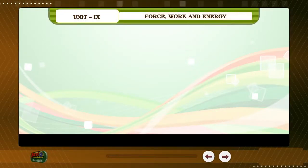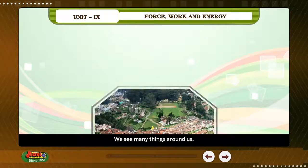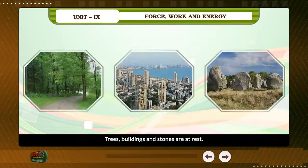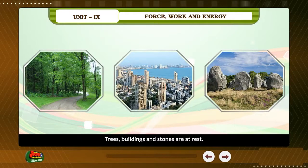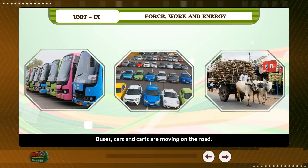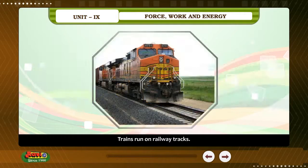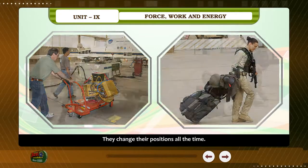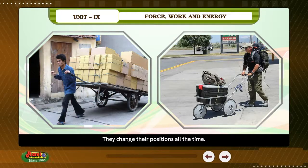Unit 9: Force, Work and Energy. We see many things around us. Trees, buildings and stones are at rest. Buses, cars and trains are moving. Trains run on railway tracks. All things which move need a push or pull. They change their positions all the time.